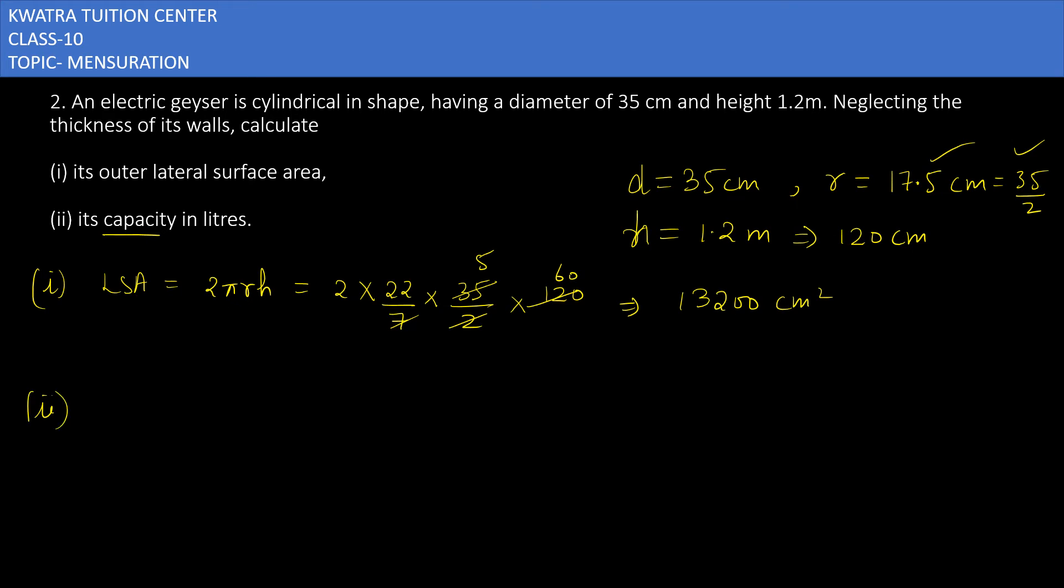Now in the second part I have to find the capacity. And how do we find capacity or what is capacity? It is same as volume. So volume of cylinder is πr²h.